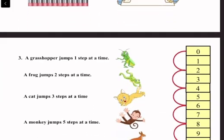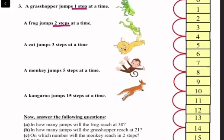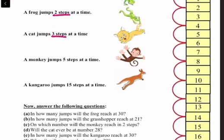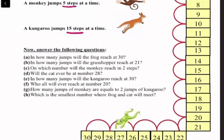Question Number 3: A grasshopper jumps one step at a time, a frog jumps two steps at a time, a cat jumps three steps at a time, a monkey jumps five steps at a time, and a kangaroo jumps 15 steps at a time. Now answer the following questions. (a) In how many jumps will the frog reach 30?